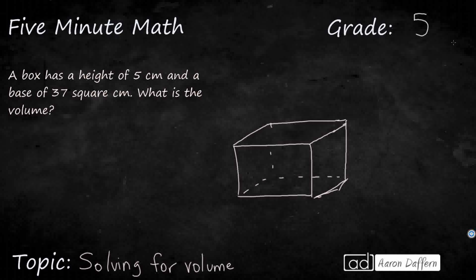A box has a height, so we can label that right here, 5 centimeters. And a base, so they're going to give us the base. We've got to remember, the base is going to be the area of the bottom. That's 37 square centimeters. I'll use the little 2 right there. So what is the volume?